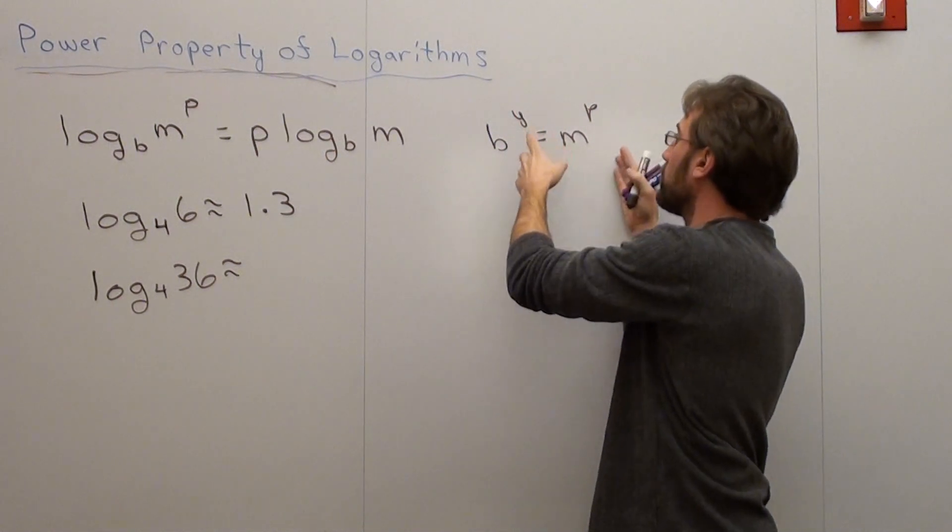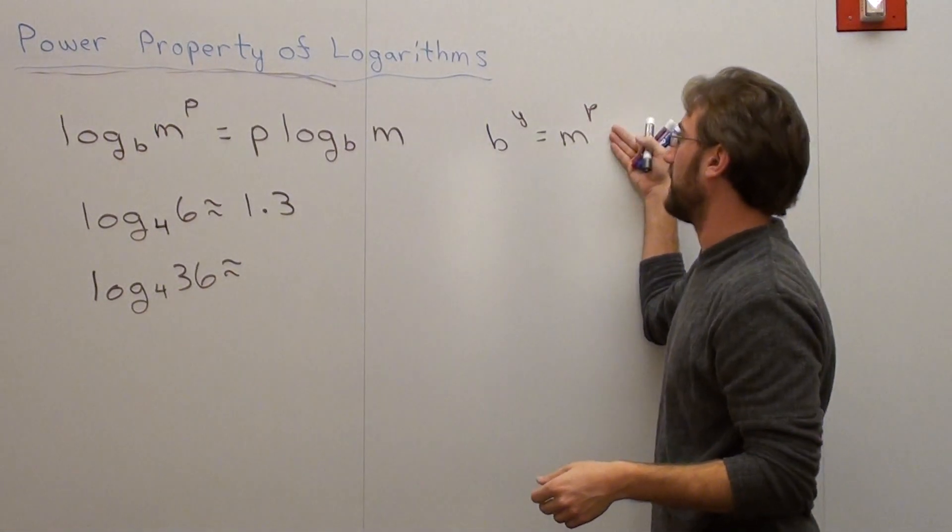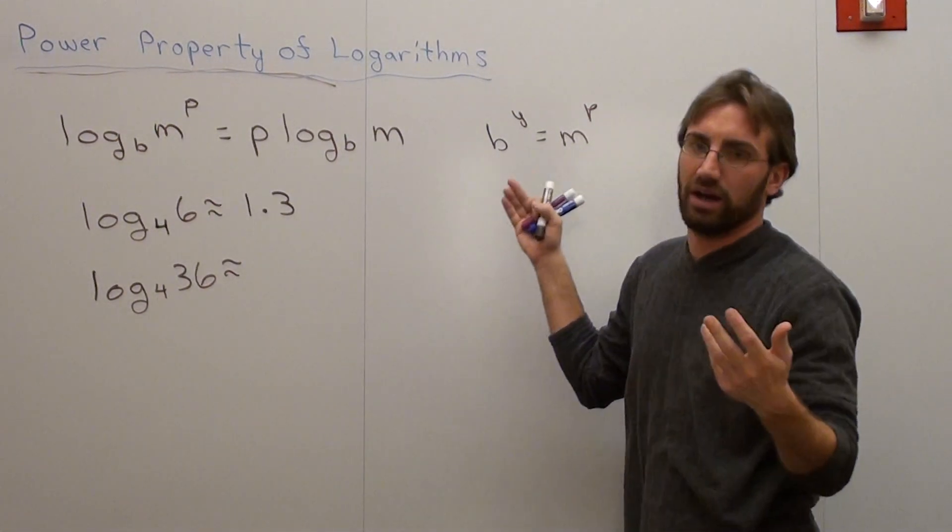If you have to reduce the base, if you have to reduce m to make it look like b, you just multiply it in, and that's pretty much it.